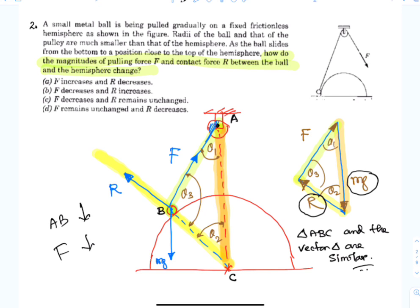R remains and this side BC remains same. So this normal reaction R also remains same. So the correct option will be option C.